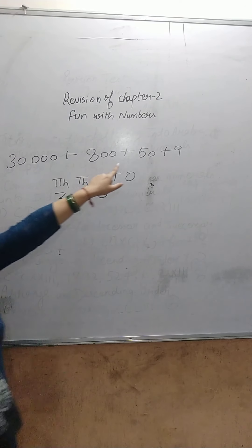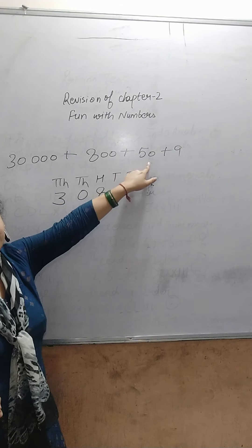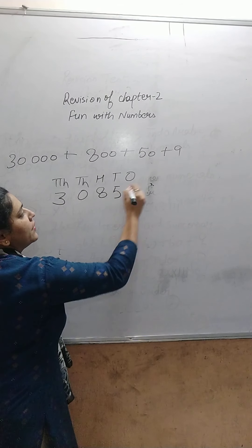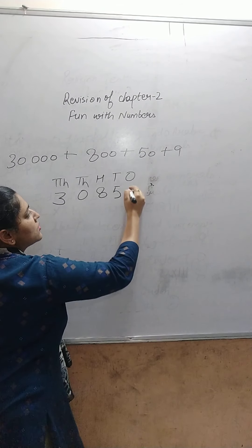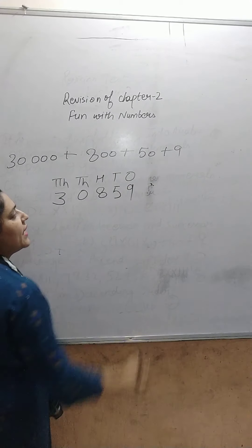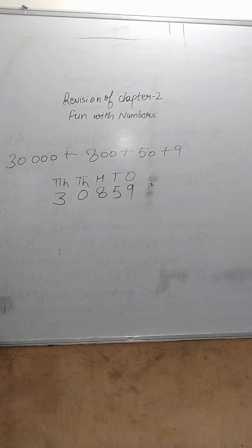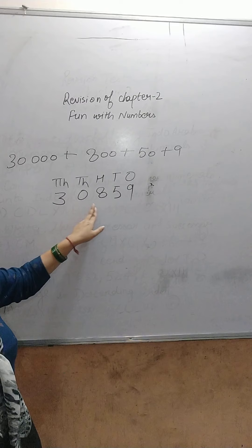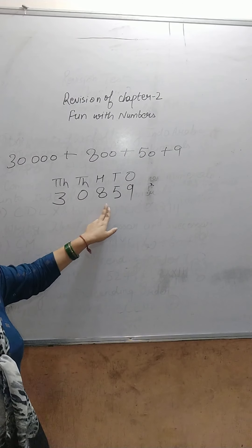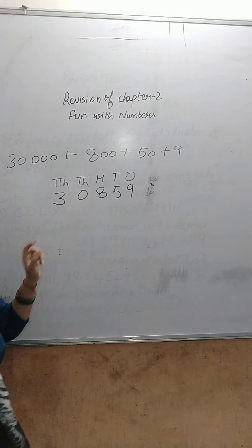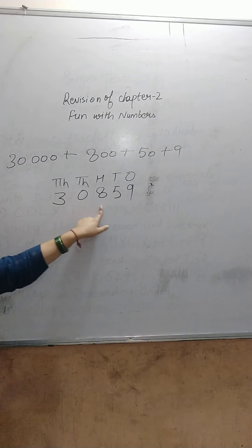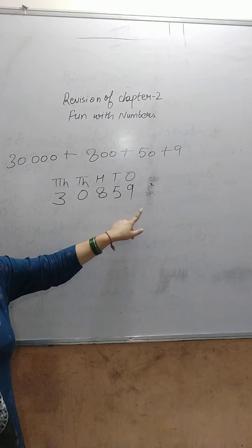Next there is 50, which is the 10's place, so write 5 here. And 9 is on the 1's place, so write 9 there. The number becomes 30,859.